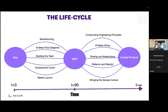For a typical startup, there are three stages. The first stage is obviously the ideation stage, when the founders ideate about what they want to build. Then as soon as they confirm the idea, they start getting into the MVP. This journey from idea to MVP requires a lot of brainstorming — endless flow diagrams, whiteboarding, or maybe Miro, where we carve out those endless flow diagrams.